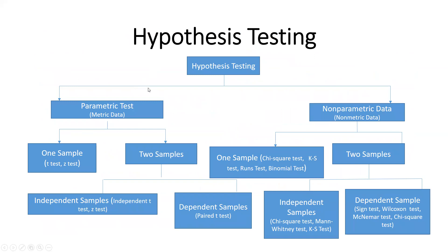This table covers hypothesis testing, parametric tests, and non-parametric tests. If your data is one sample, then you apply t-test and z-test. When your data is two samples, it could be either dependent or independent. When independent, you apply independent t-test and z-test. When data is dependent, you apply paired t-test. For non-parametric data, with one sample: chi-square test, KS test, runs test, or binomial test. For two non-parametric samples — independent: chi-square test, Mann-Whitney test, KS test; dependent: sign test, Wilcoxon test, McNemar test, chi-square test.